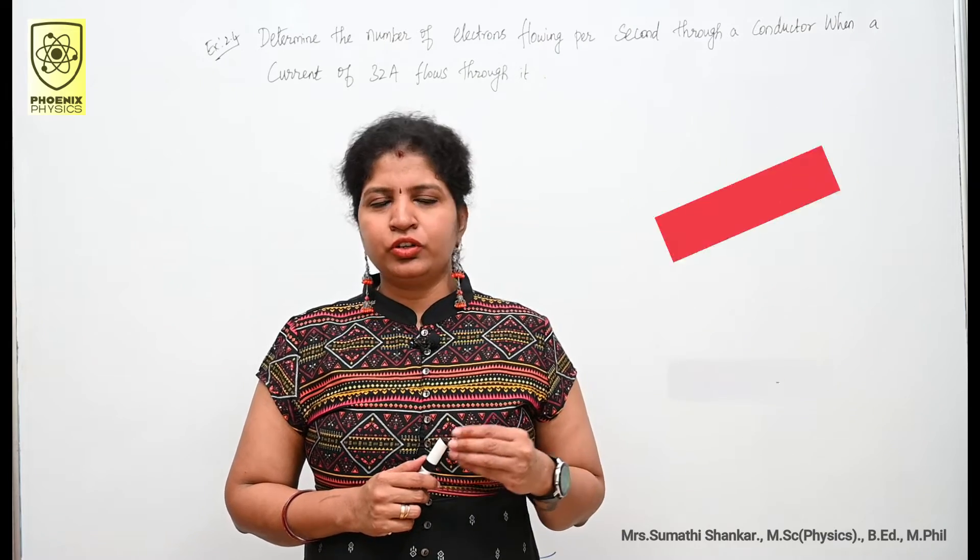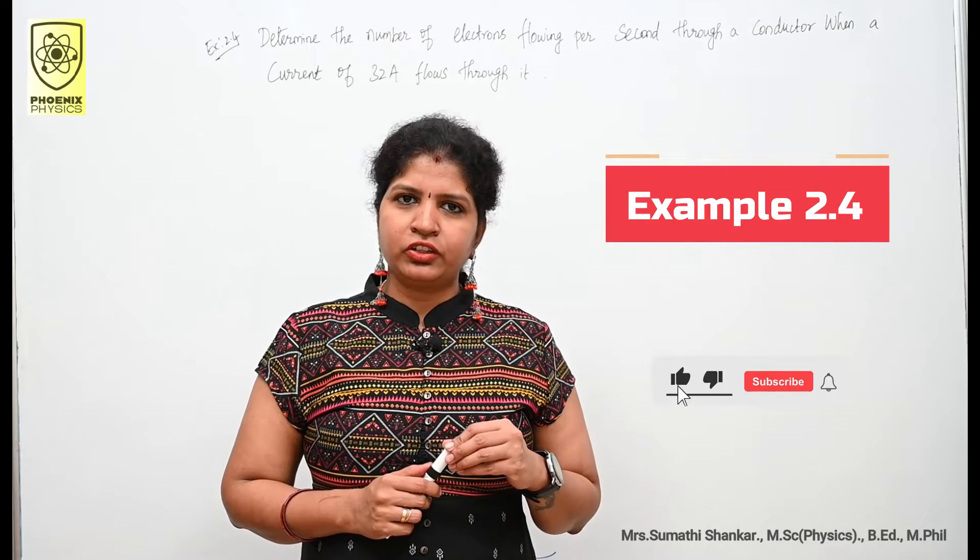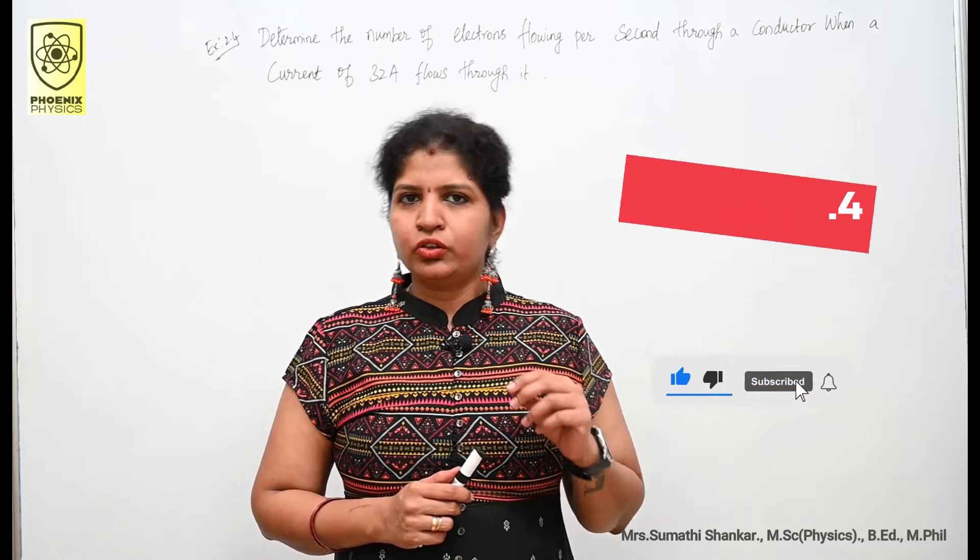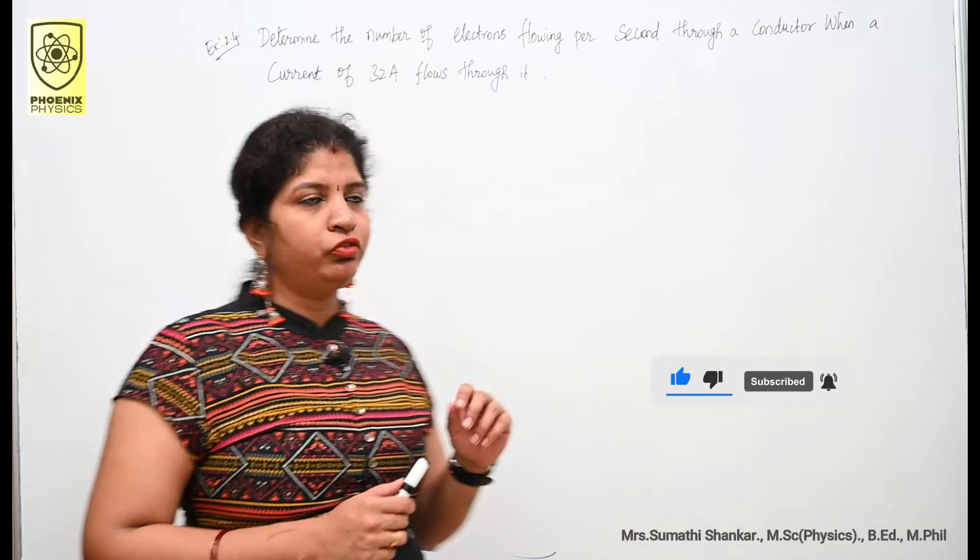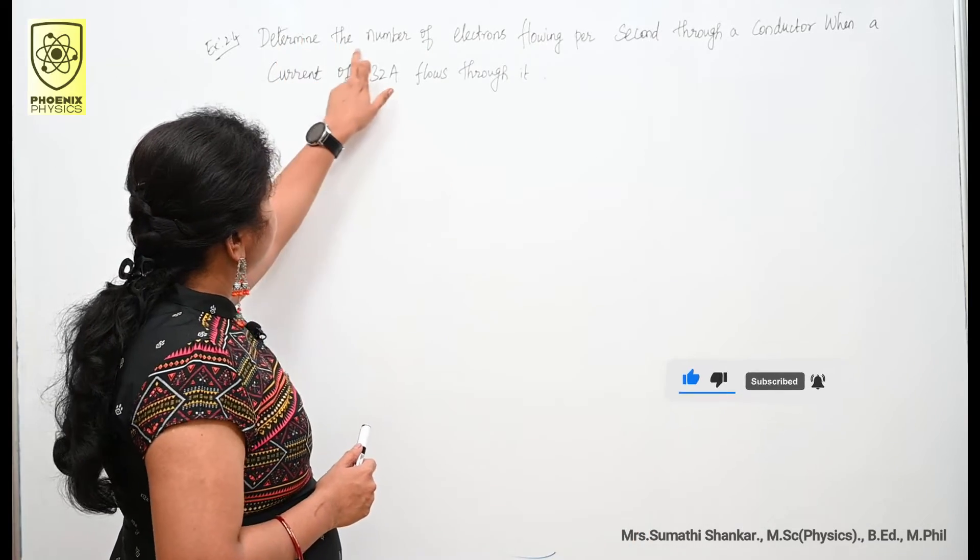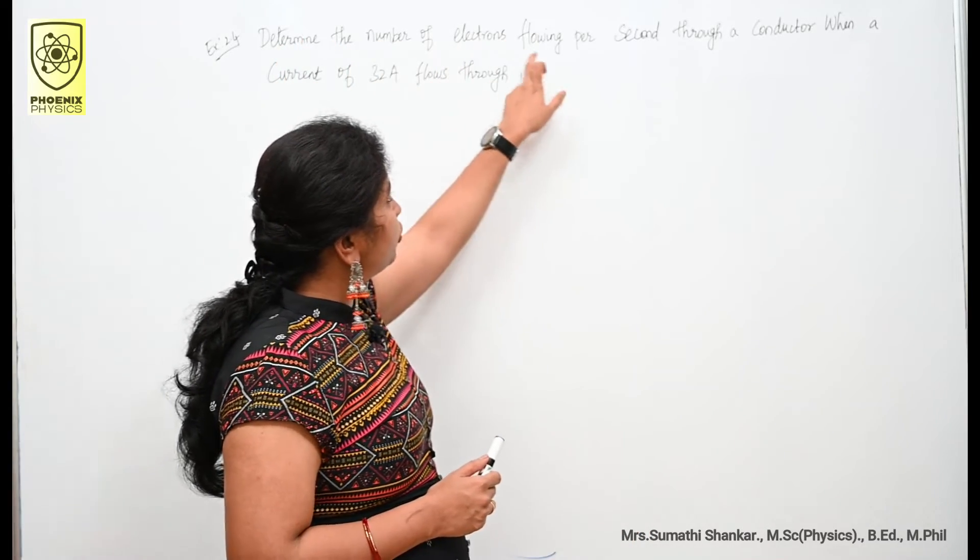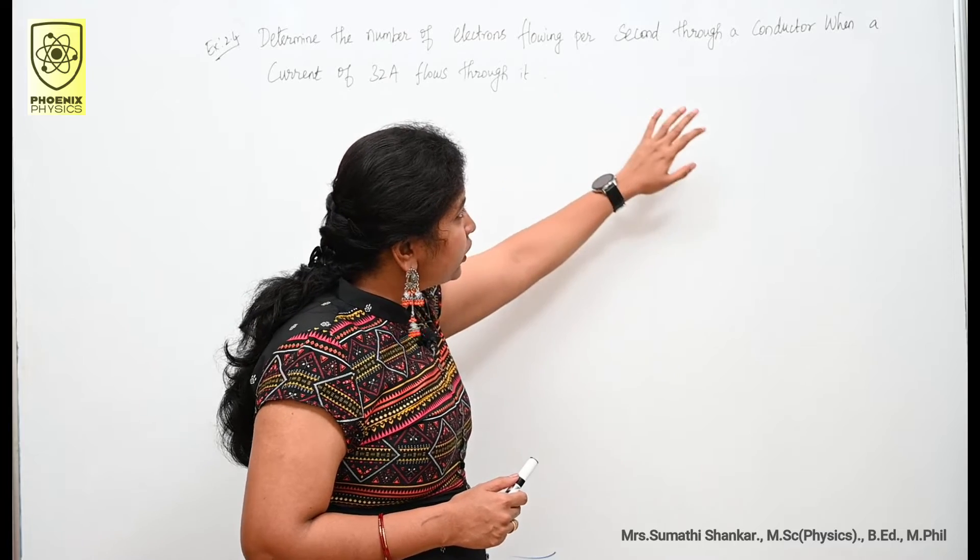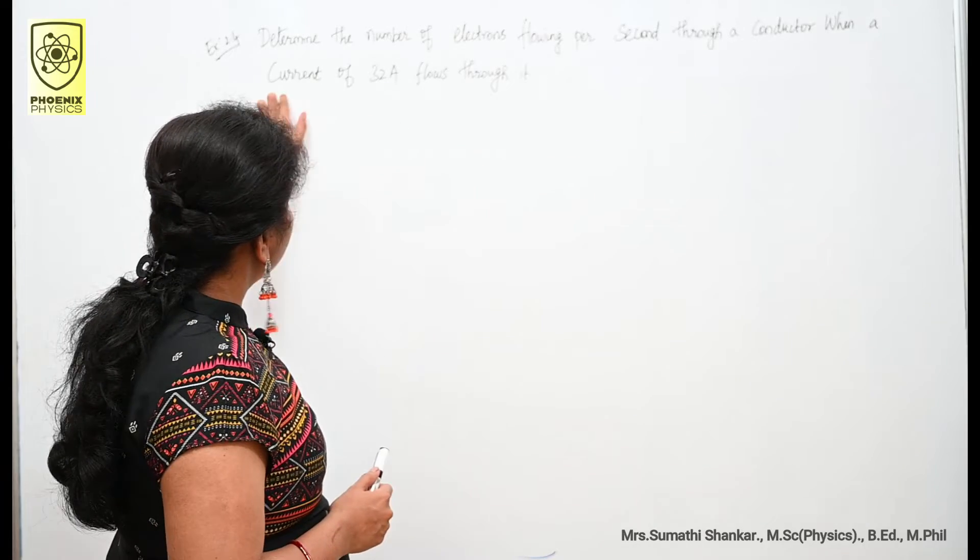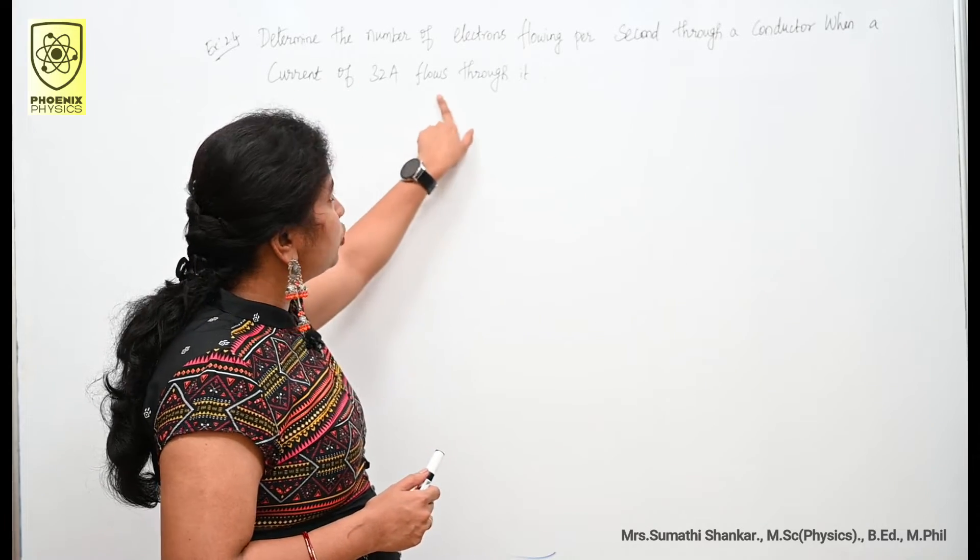Hello friends and my dear students, welcome back to my channel Phoenix Physics. Today we are going to discuss example 2.4. Determine the number of electrons flowing per second through a conductor when a current of 32 ampere flows through it.